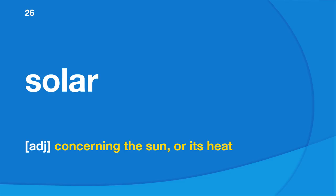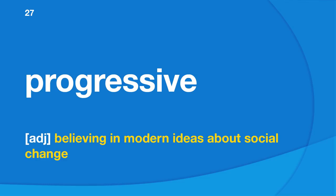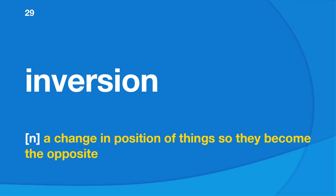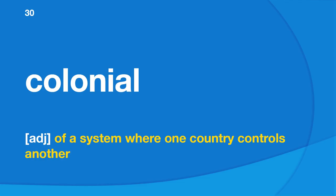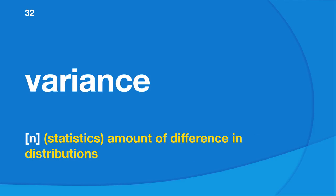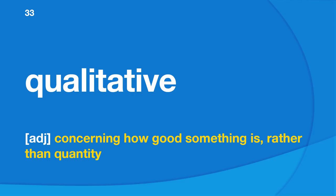Solar: concerning the sun or its heat. Progressive: believing in modern ideas about social change. Sensation: a feeling that is experienced by the body, usually through the sense of touch. Inversion: a change in position of things so they become the opposite. Colonial: of a system where one country controls another. Dictate: to speak while another person writes the words down. Variance: amount of difference in distributions. Qualitative: concerning how good something is, rather than quantity. Layout: plan or design of something, for example of a book page.